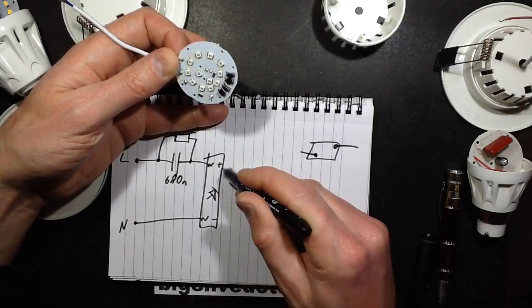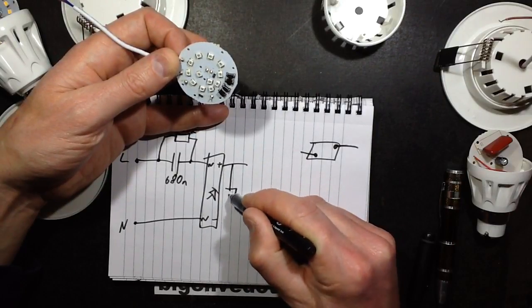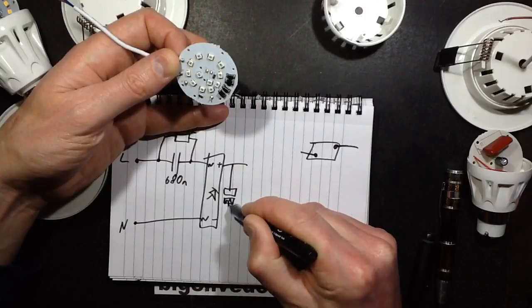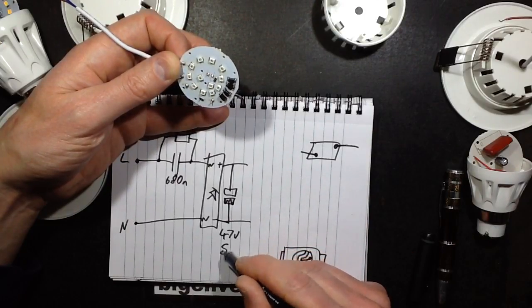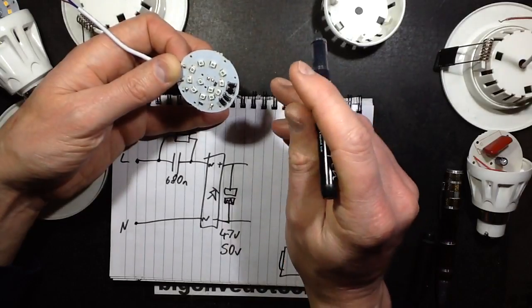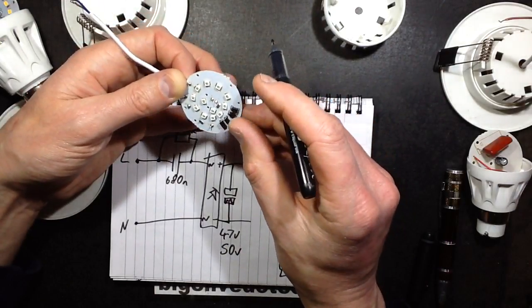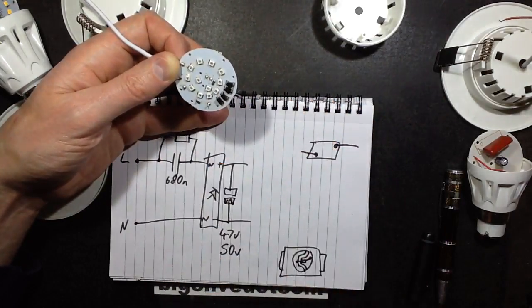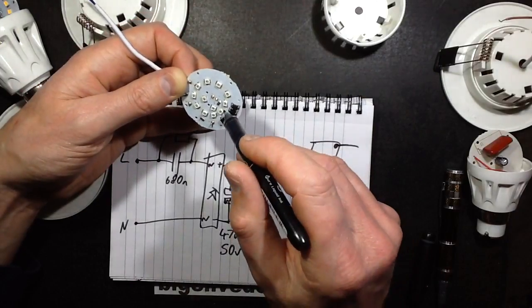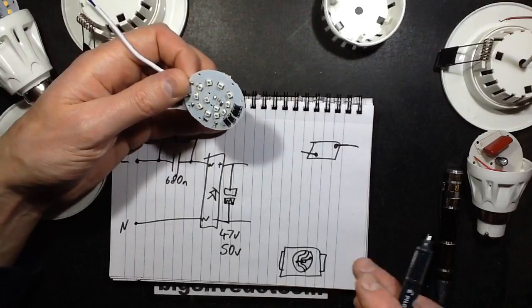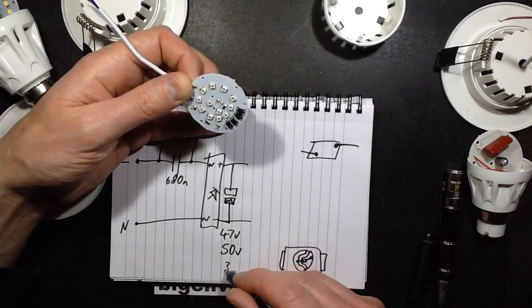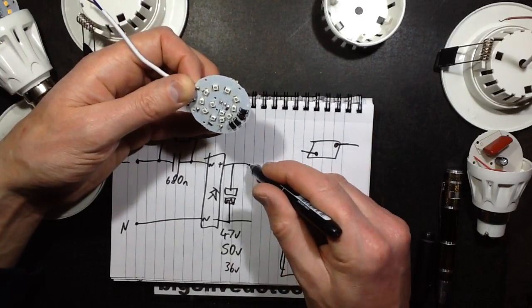The output is got a capacitor across it which was the 47 micro at 50 volt. And there's 12 LEDs: 1, 2, 3, 4, 5, 6, 7, 8, 9, 10, 11, 12. At 3 volts each they're going to be about 36 volts total so the 50 volts is fine for that.